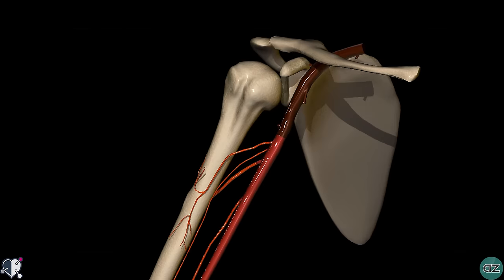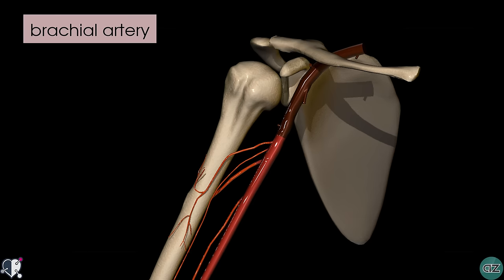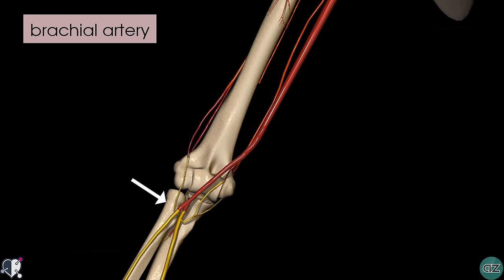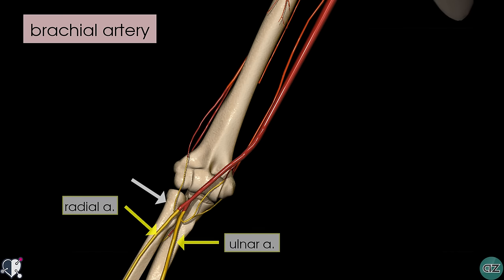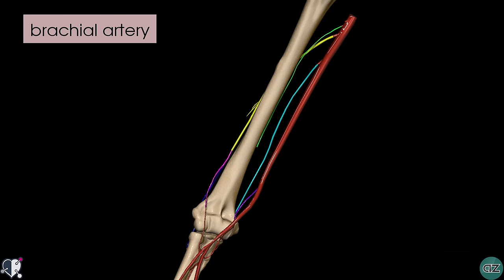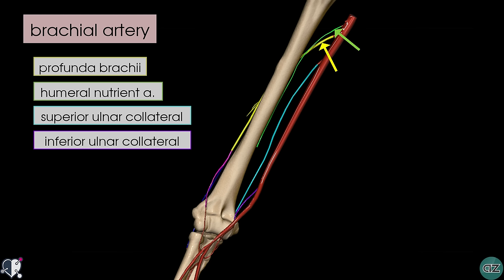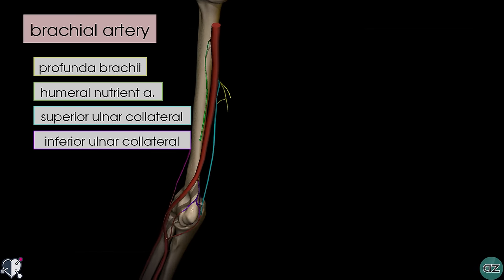The axillary artery becomes the brachial artery at the level of the lower border of the teres major muscle, which marks the lower boundary of the axilla. The brachial artery runs down the arm to end at the level of the neck of the radius, where it divides into the radial and ulnar arteries. The brachial artery runs a superficial course just below the deep fascia, and it gives off four branches: the profunda brachii artery in yellow, the nutrient artery to the humerus in green, and the superior and inferior ulnar collateral arteries in light blue and purple respectively.